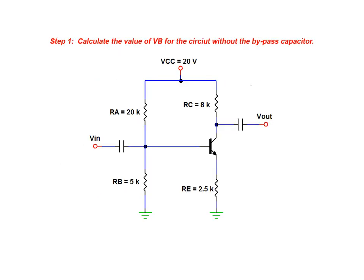We begin our solution by calculating the base voltage for the circuit in its unmodified state. The base voltage can be determined by applying the voltage divider rule using the values of RA, RB, and VCC. When we substitute the known values and solve the equation we end up with a base voltage value of 4 volts.